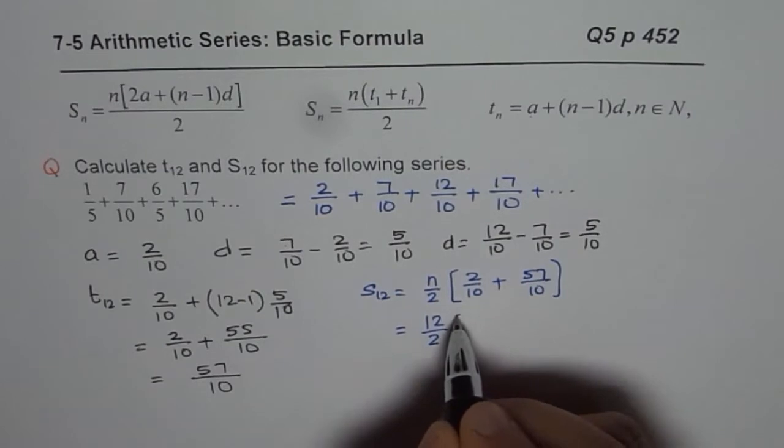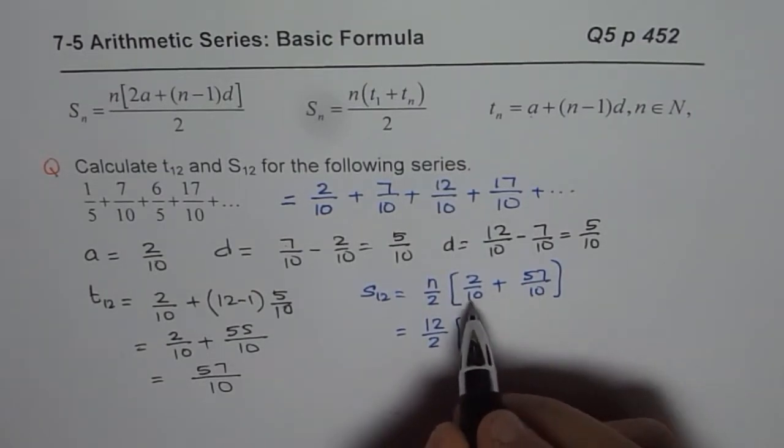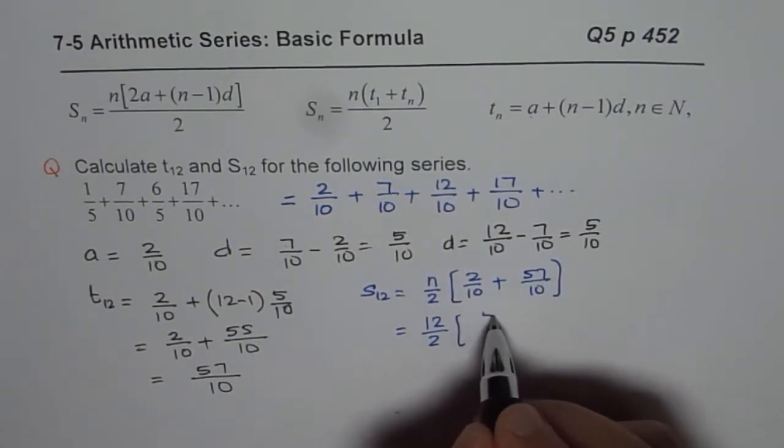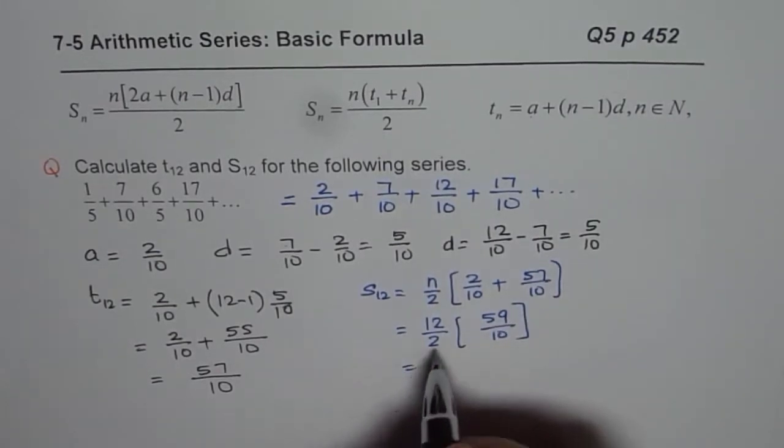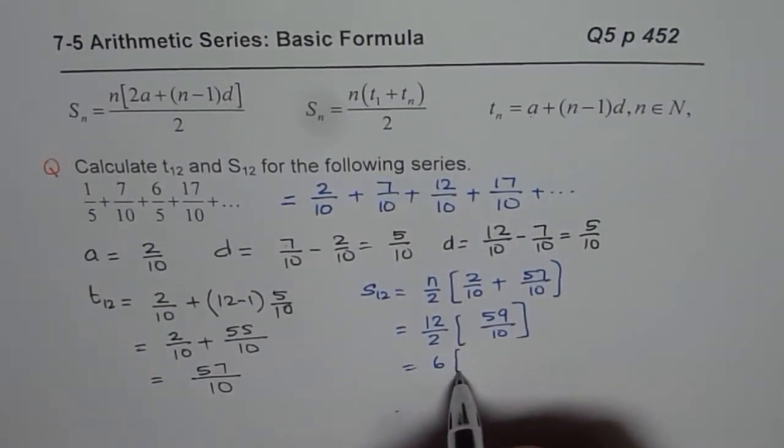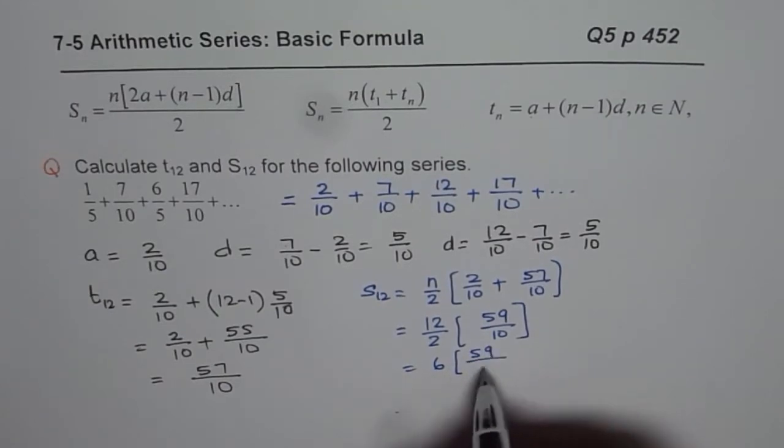Which I could write as, N for us is 12. So we will write 12 over 2. And then here since we kept the basis same, it is easy. 59 over 10. And that gives us 6, 6 times 59 over 10.